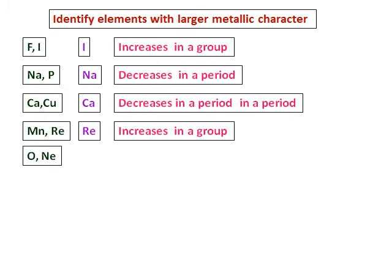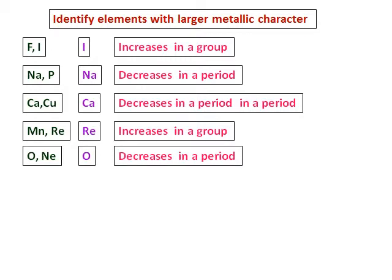Between oxygen and neon, metallic character decreases in a period, so oxygen is more metallic than neon. Of course both of them are gases, but if you look at where they are in the periodic table, oxygen is the answer.